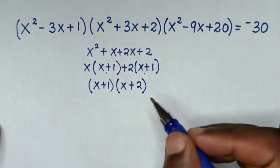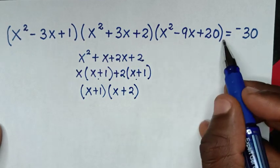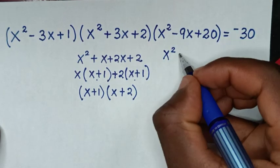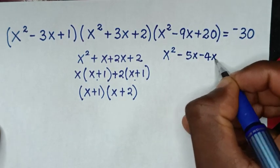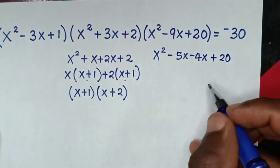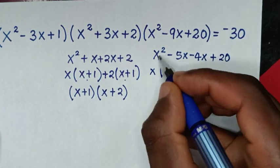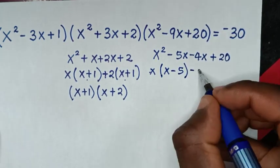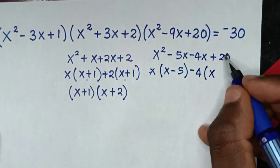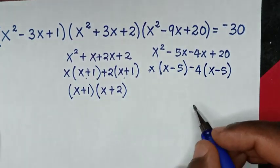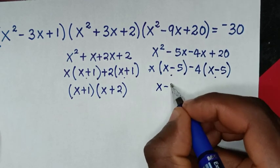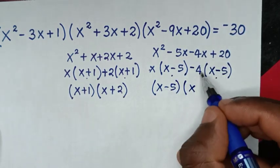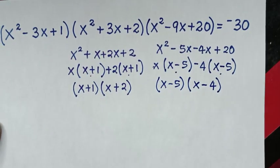The third quadratic equation, x²-9x+20, can also be factorized. We split -9x as -5x-4x, take x out to get x(x-5), and take -4 out to get -4(x-5). Since (x-5) is common, we get (x-5)(x-4).